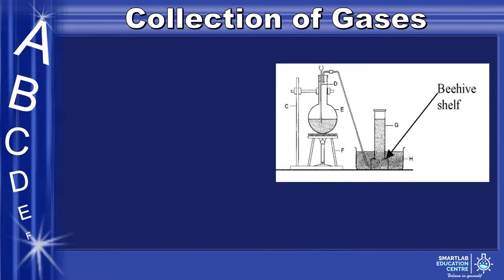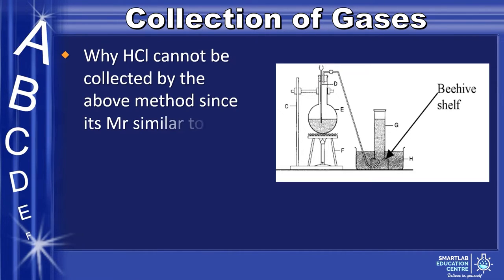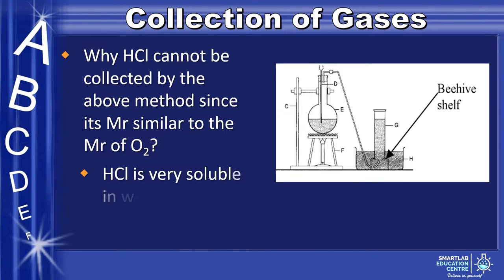A commonly asked question is why hydrogen chloride can be collected by the downward delivery method since its molar mass is similar to the relative molecular mass of oxygen. It is because it is very soluble in water.